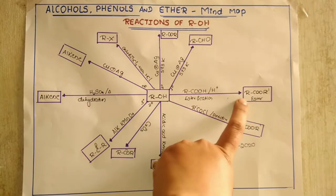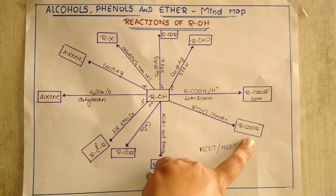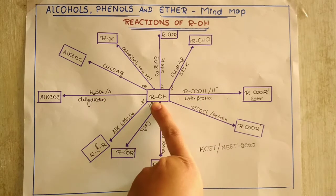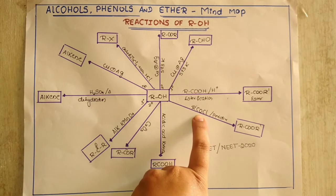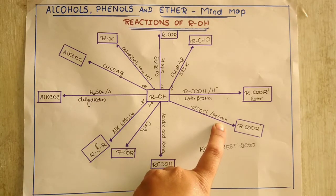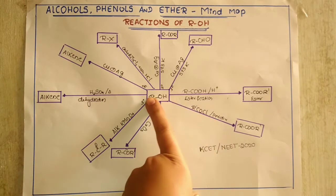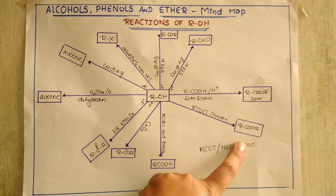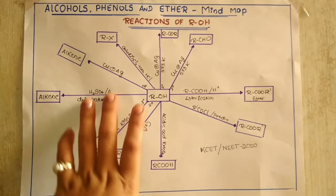Similarly, we can also get an ester when alcohol is treated with an acyl chloride or acyl halide. When alcohol is treated with an acyl halide in the presence of pyridine, we are going to get an ester as a product. So these are the two reactions that give an ester.